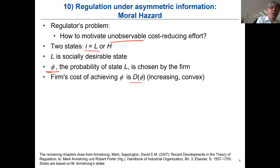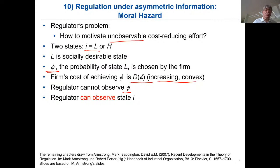Of course, working harder implies a cost — in German, Arbeitsleid — which is increasing and convex: the harder you work, the higher the marginal disutility of effort. The regulator cannot observe how hard the firm worked but can observe the realized state. Even though managers don't work hard, they might get a good state — just as in the classic tenant example, a tenant who doesn't work hard might still get a good harvest because the weather is so good.